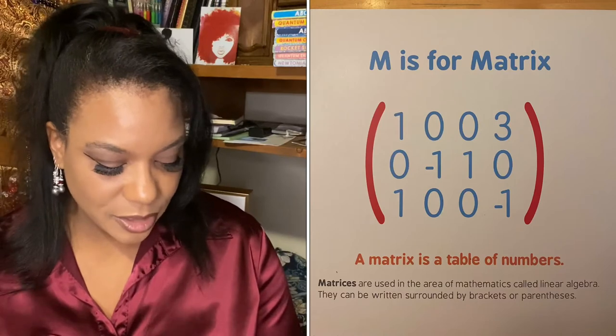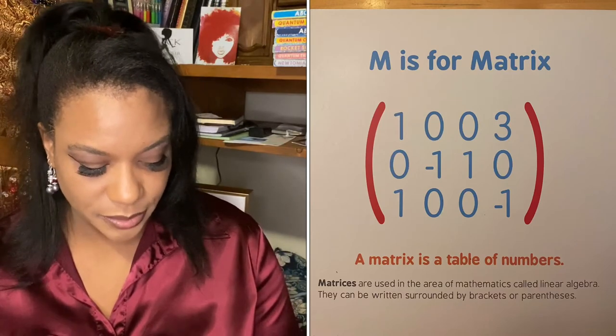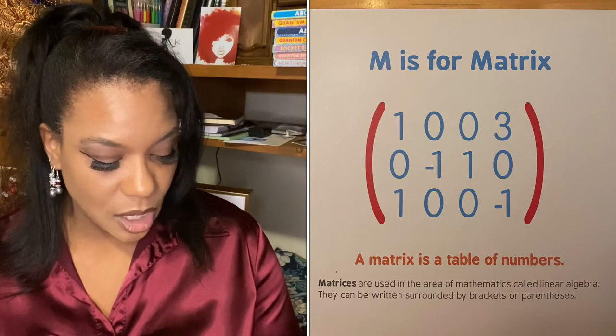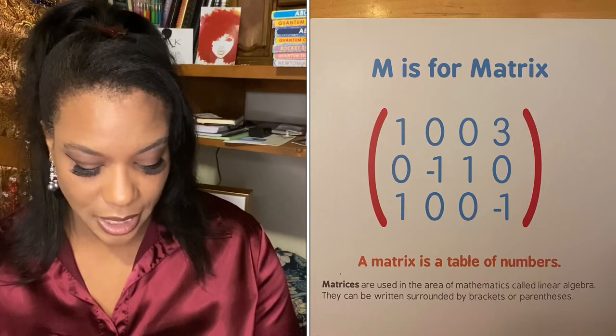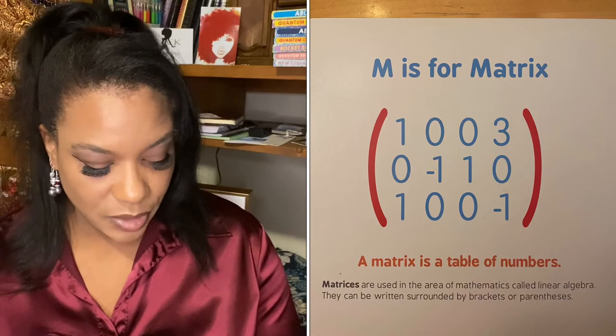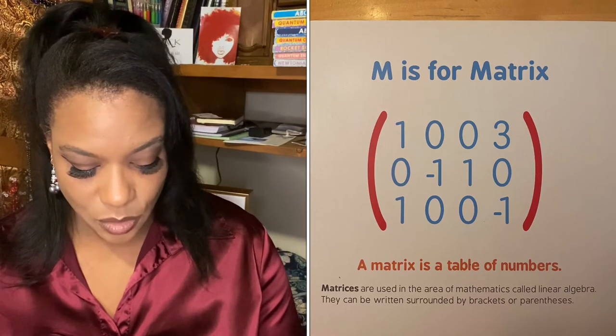M is for matrix. A matrix is a table of numbers. Matrices are used in the area of mathematics called linear algebra. They can be written surrounded by brackets or parentheses.